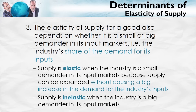On the other hand, supply will tend to be inelastic when the industry is a big demander in its input markets. Suppose the demand for automobiles were to increase. In order to expand the supply of automobiles, we need more steel — and automobiles are a big demander of steel. So when we want to increase the supply of automobiles, we're going to use a lot more steel, pushing up the price of steel, which increases the cost of producing automobiles. Therefore, the supply of automobiles will tend to be more inelastic.